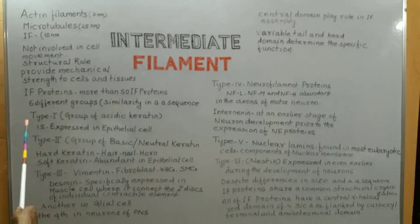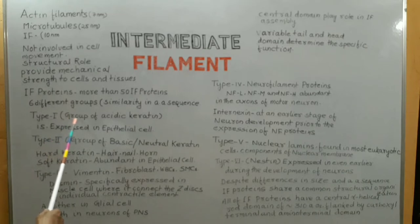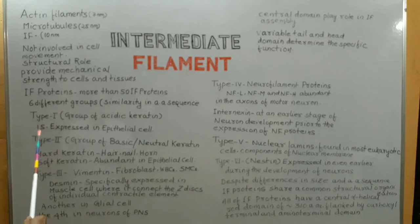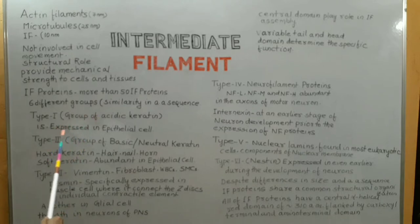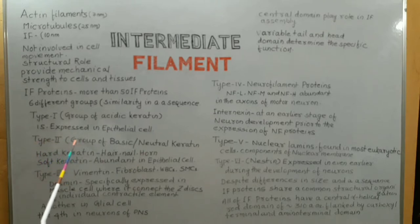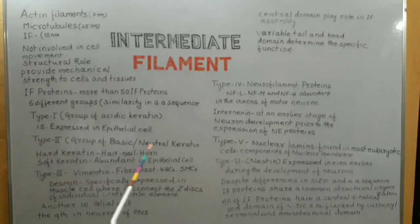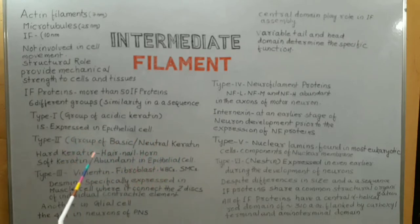The first group is Type 1 intermediate filament protein. It includes a group of acidic keratins. About 15 Type 1 intermediate filament proteins are there, and these proteins are expressed in epithelial cells. Next, Type 2 intermediate filament protein includes a group of basic and neutral keratins. Keratin can be divided into two different groups: hard keratin and soft keratin.